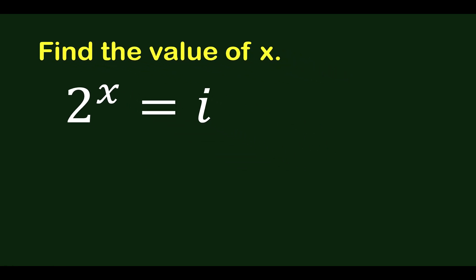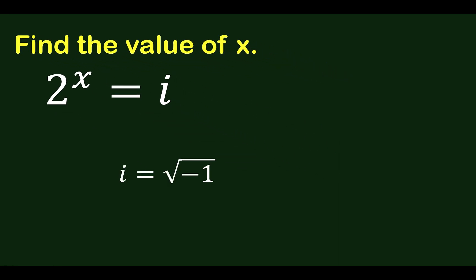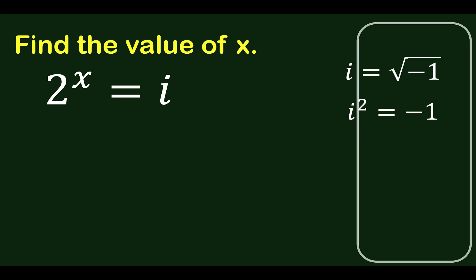Now, let's solve this problem together. Recall that by definition, the imaginary unit i is equal to the square root of negative 1. Consequently, i squared equals negative 1. Let's remember this and consider this as our memory corner. Let's go back to the given problem.